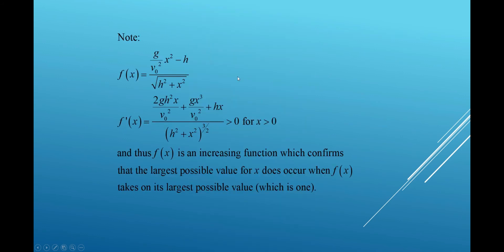If you were doubting what I'm saying is true, here's that function I claimed was an increasing function — and therefore I'm going to maximize x when the value of the argument equals 1. The derivative of this function, using a little calculus, gives this result. For positive values of x, this derivative has to be positive. So you've got an increasing function, which confirms that the maximum possible value for the range does occur when f(x) takes on its largest possible value — which is 1. Pretty cool!